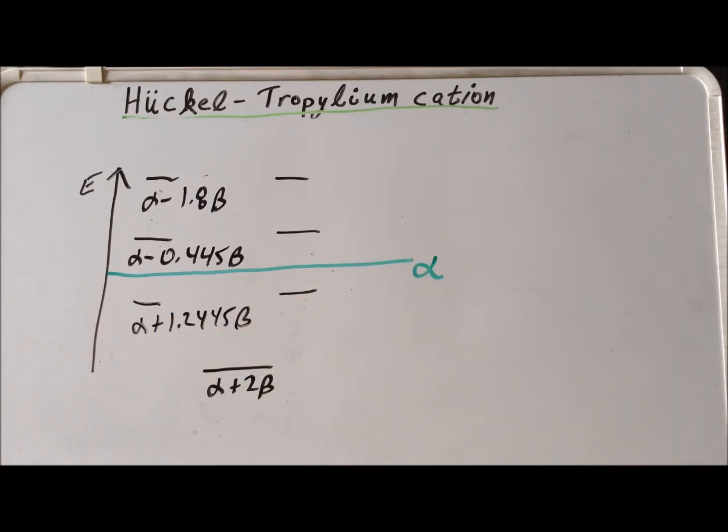Also notice that I put in a green line here to show the position of alpha itself. Alpha is the reference energy for an electron in a carbon 2pz orbital. So we can think of any energy levels below alpha as being net stabilizing, net bonding, and any higher in energy than alpha as being destabilizing or net antibonding.